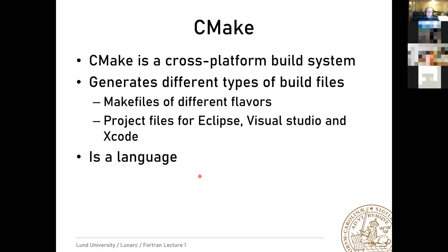CMake is a cross-platform meta-build system — it doesn't build anything itself, but generates build files for different platforms and different build systems. It can generate Makefiles of different flavors, and also project files for Visual Studio, Eclipse, Xcode, and more. CMake is actually a complete programming language — you write descriptions of your program in a special language.